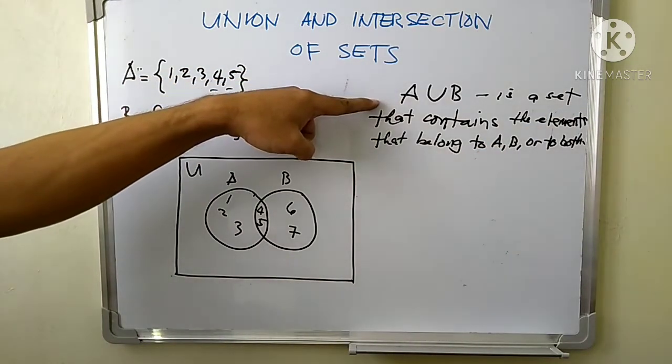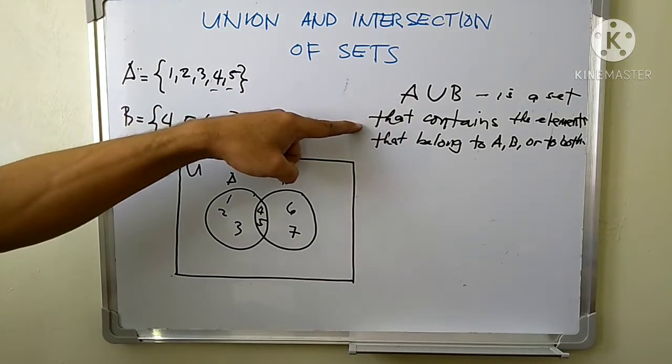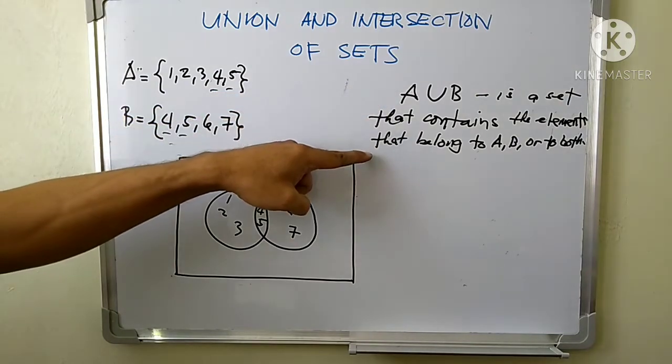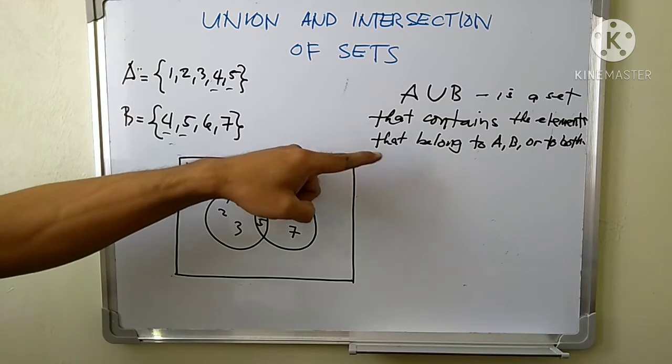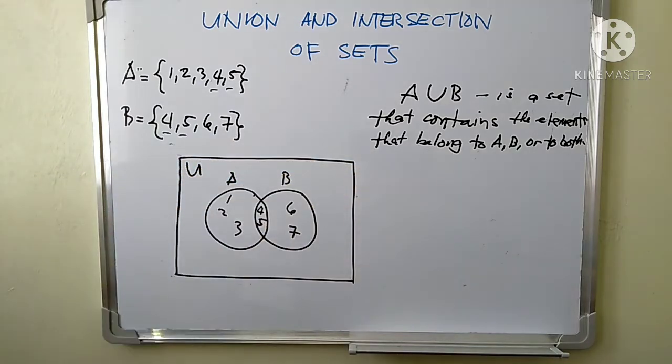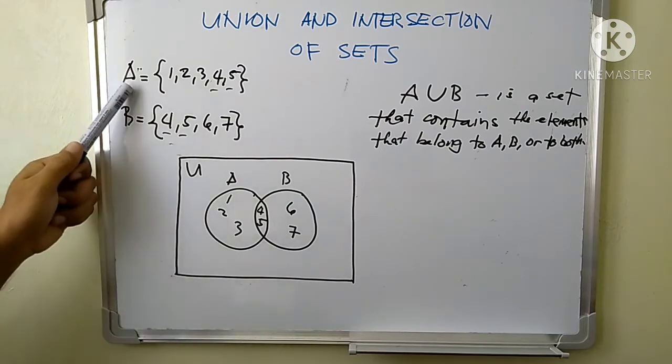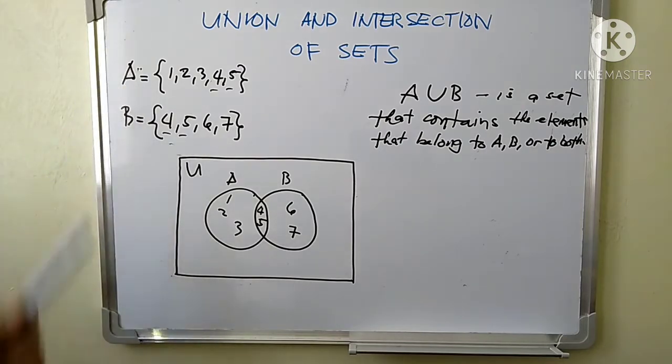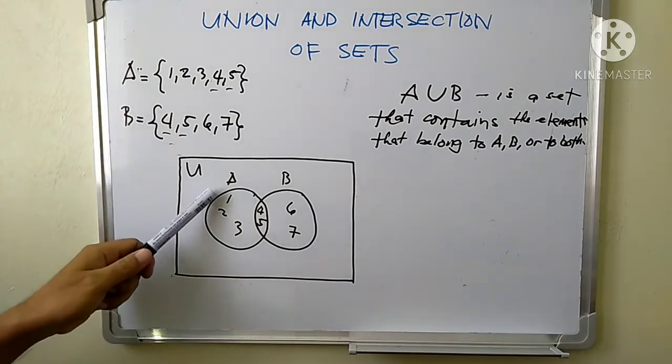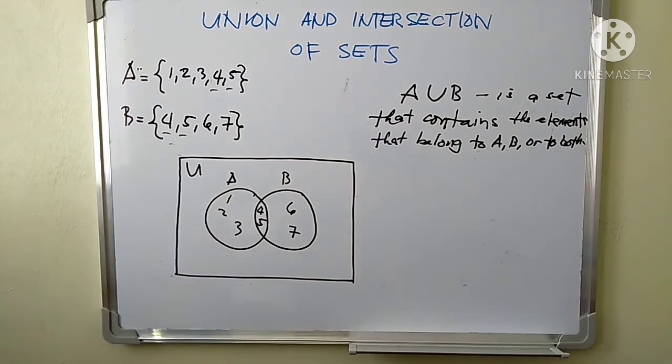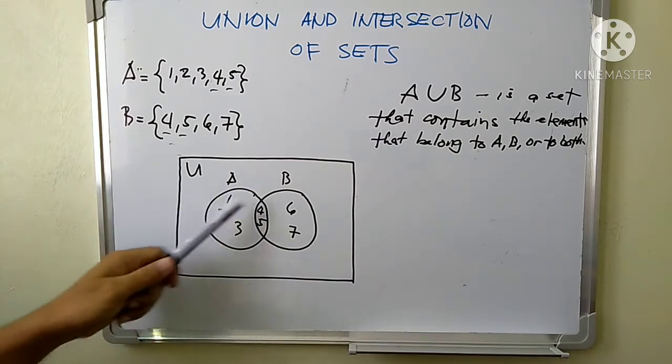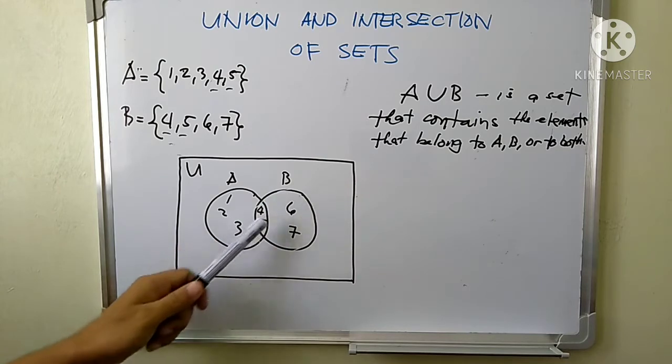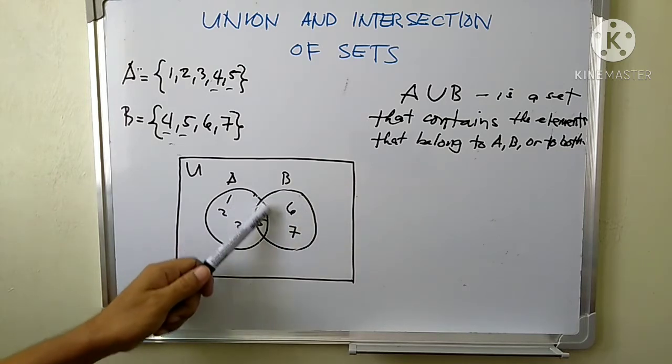The union of set A and B is a set that contains the elements that belong to A, B, or to both. What are those elements that belong to A, to B, or to both? We have this set A, we have set B, and to both A and B is this one.